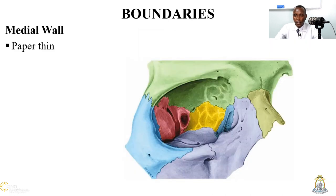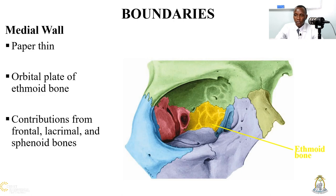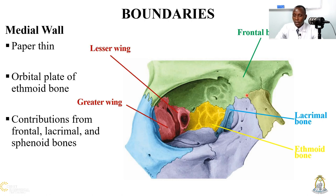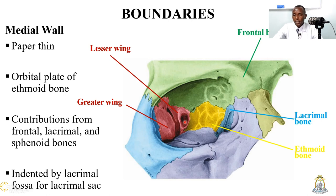The medial wall is majorly contributed by the ethmoid bone, with some other contributions from the frontal, lacrimal, and sphenoid bones, as can be seen. We have the frontal bone, green in color; the ethmoid bone is the one which is yellow; the lacrimal bone is purple; and it also has some lesser contribution from the lesser wing of the sphenoid bone. The medial wall is indented by the lacrimal fossa for the lacrimal sac.